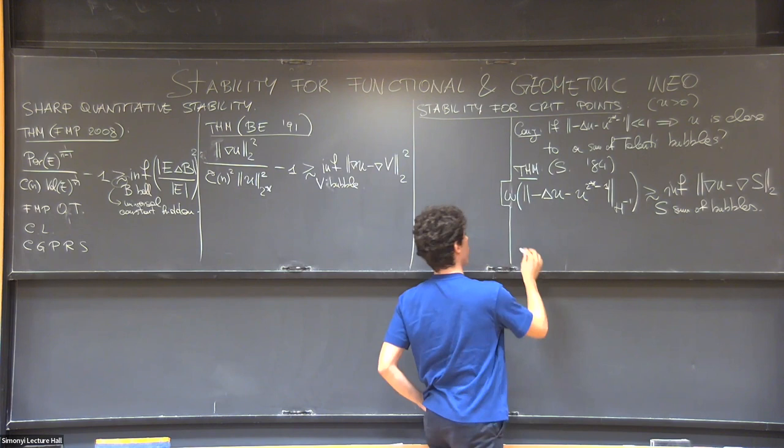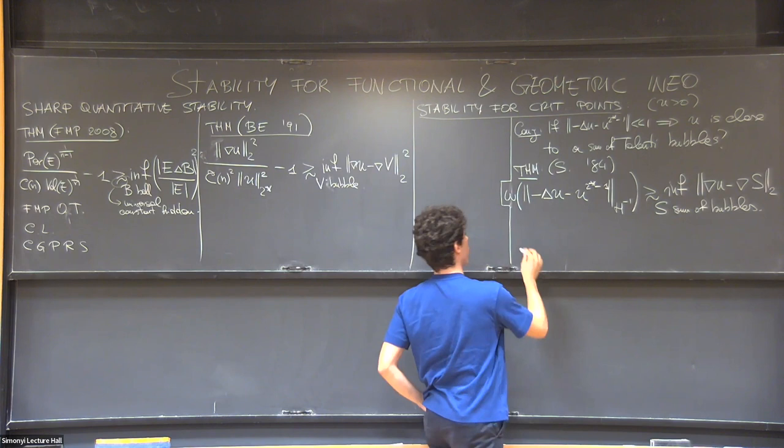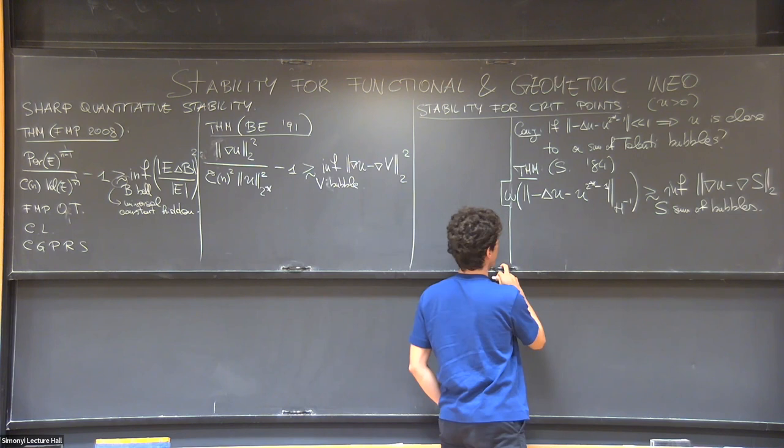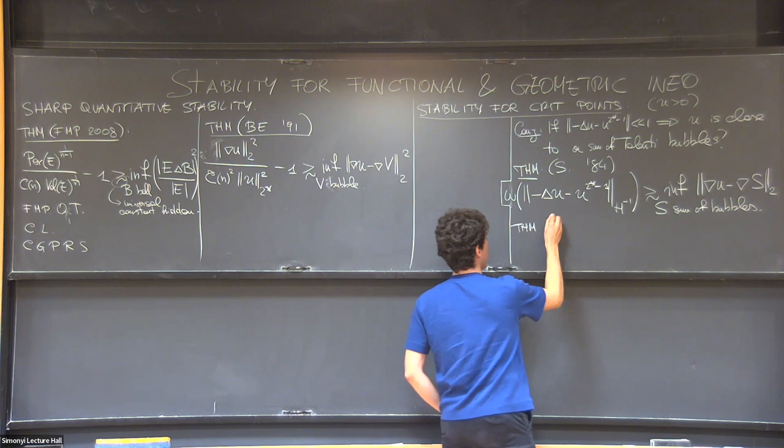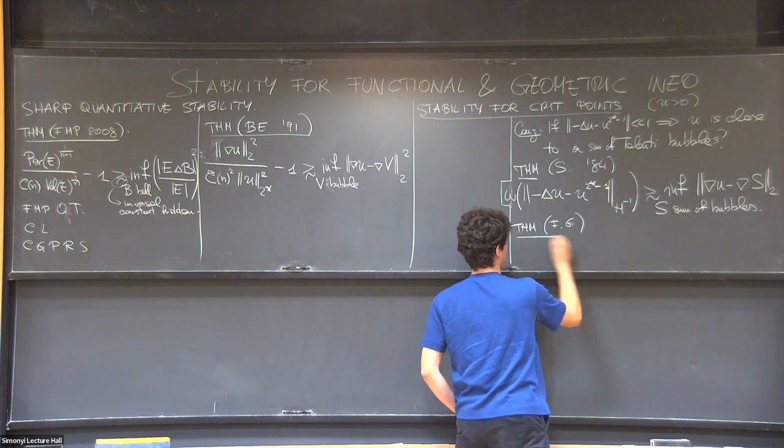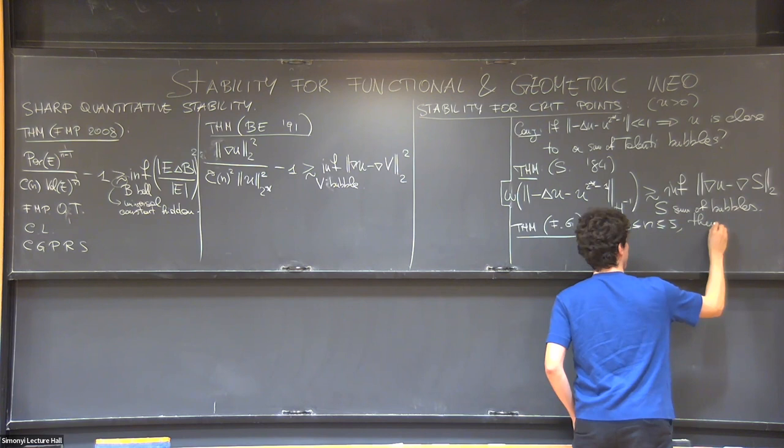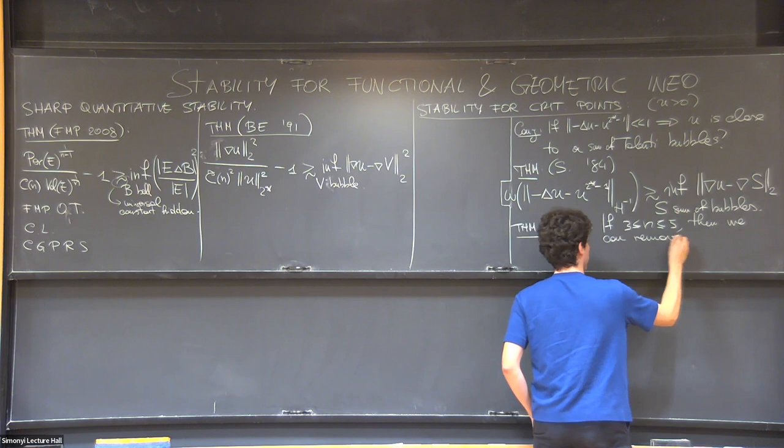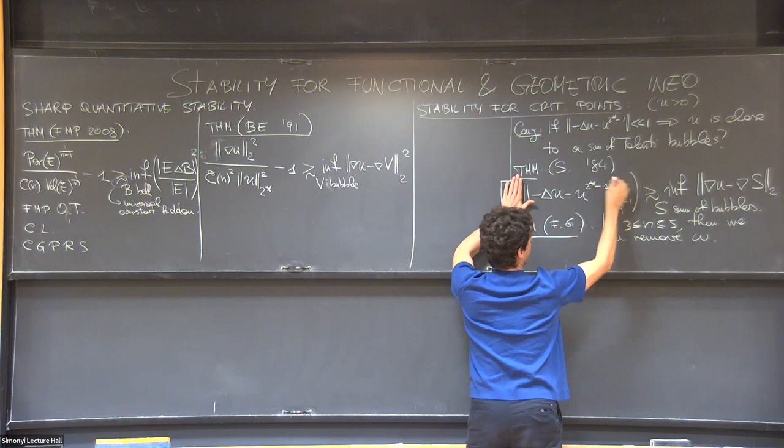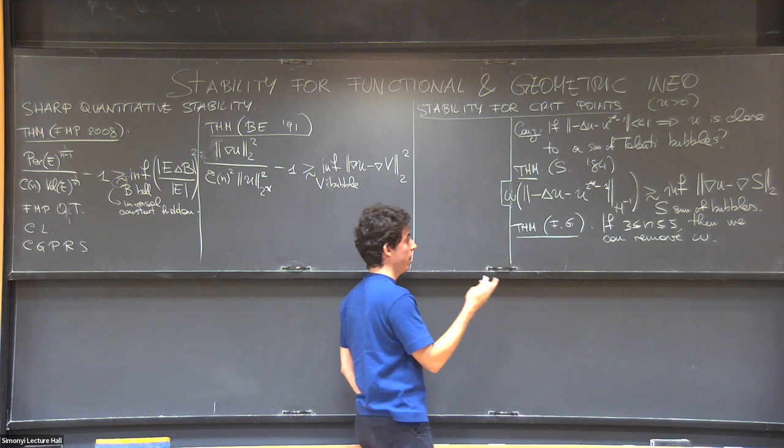And before getting to something quantitative, we need to wait a bit. And the quantitative version was done by me and Alessio. And more or less, but only in low dimension. If three, if the dimension is between three and five, then we can remove omega. And the result is sharp. Like, we just remove omega, and this is sharp. Like, you cannot put exponents anywhere, it will become false. But this is only in dimension between three and five. And in the paper, in fact, we proved that it's false in higher dimension.